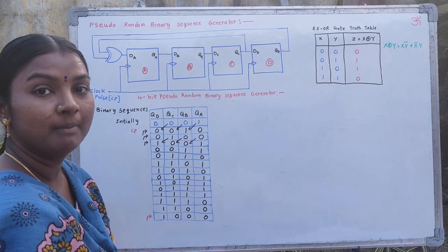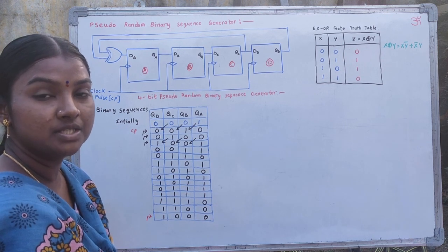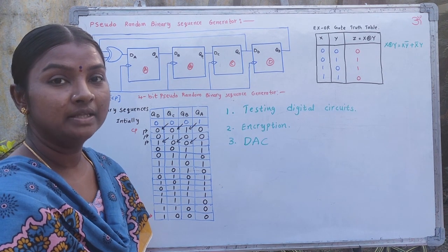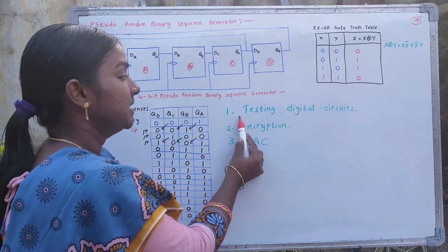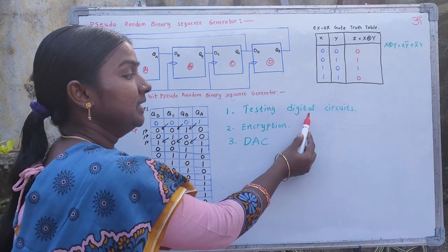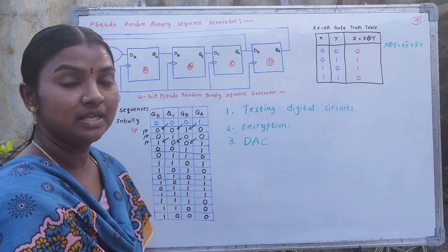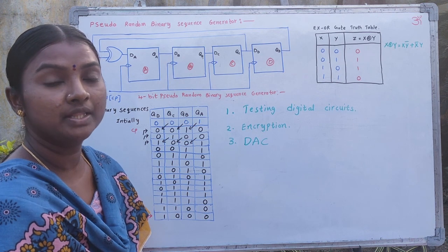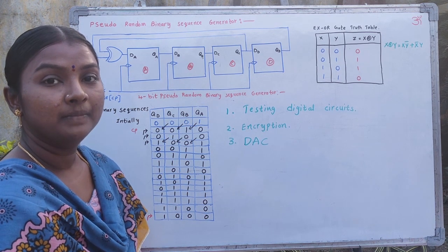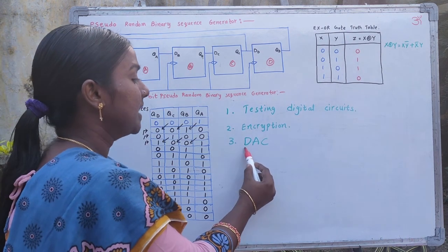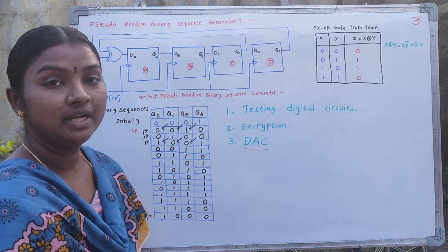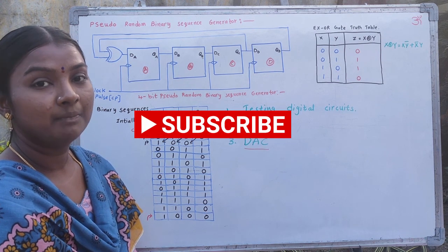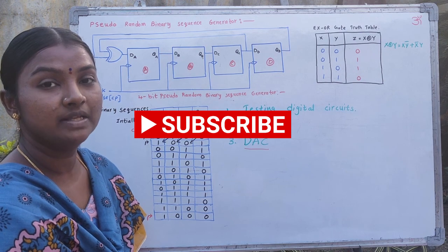We may generate different types of binary sequences using this pseudo-random binary sequence generator. The applications are: first, it can be used to test digital circuits; second, it can be used to encrypt digital data so that unauthorized persons cannot read it; third, this circuit can be connected to a digital-to-analog converter to generate random noise, which can be used to test audio systems. This completes the explanation of the pseudo-random binary sequence generator.